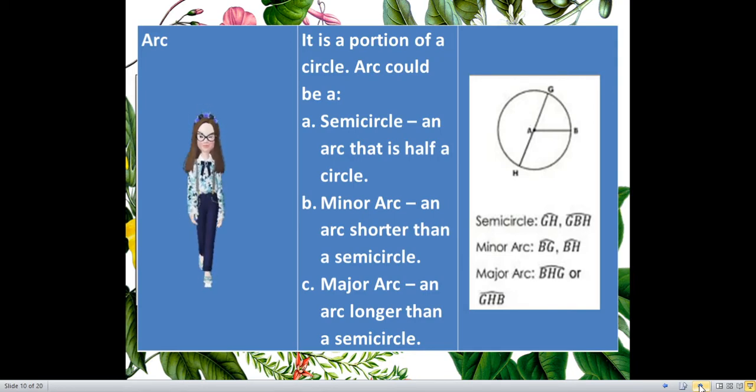Semicircle, it is an arc that is half a circle. So, if it is half a circle, on our illustration here, we have the circle A, again, because that is your center. So, circle A can have the semicircle GH, semicircle GH. Or you can use the three letters because it have it there. The semicircle GBH.